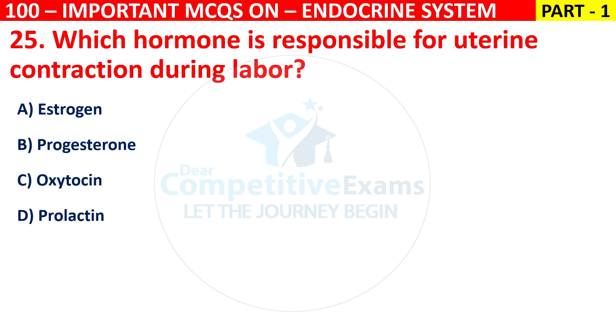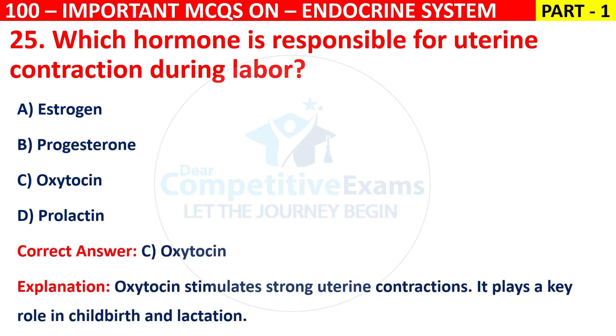The correct answer is C, that is oxytocin. Oxytocin stimulates strong uterine contraction. It plays a key role in childbirth and lactation.